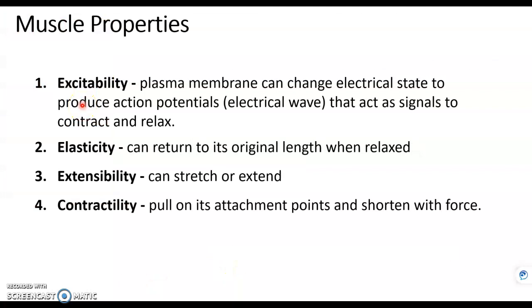Muscle has four properties. The first is excitability. Only muscle cells and nerve cells have this property. That means their plasma membrane can carry electrical charge. We call those impulses or action potentials, and that's how information flows through our body.